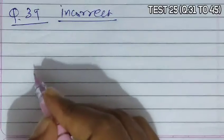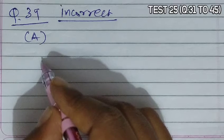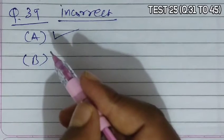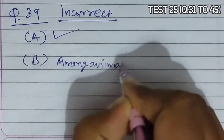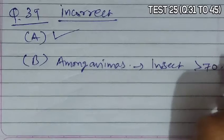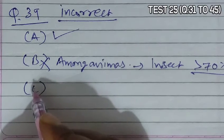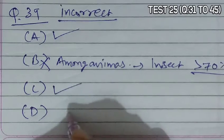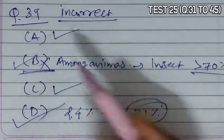Question 39 asks to choose the incorrect sentence. Option A states that more than 70% of all species recorded are animals while plants comprise no more than 22% — correct. Option B states that the number of fungi species in the world is more than the combined total of fishes, amphibians, reptiles, and mammals — this is incorrect. Option D states India has 2.4% of the world's area but accommodates 8.1% of the world's species — correct. So B is incorrect, making B the correct answer.